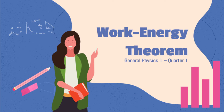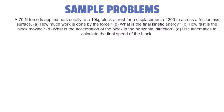So the first problem is: a 17 newton force is applied horizontally to a 10 kilogram block at rest for a displacement of 200 meters across a frictionless surface. How much work is done by the force? What is the final kinetic energy? How fast is the block moving? What is the acceleration of the block in the horizontal direction? And lastly, use kinematics to calculate the final speed of the block.